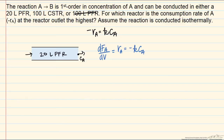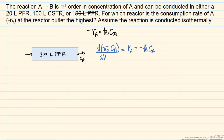Since the system is isothermal, K is a constant. Because it's isothermal and there's a constant number of moles (A to B reaction), we also assume constant pressure, and therefore a constant volumetric flow rate throughout the reactor. This allows us to replace the molar flow rate F_A with the volumetric flow rate times the concentration of A. We can then move the volumetric flow rate out of the derivative since it's constant, giving us: V₀ · (dC_A/dV) = negative K · C_A.